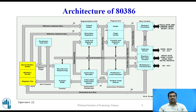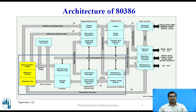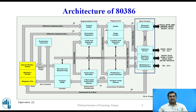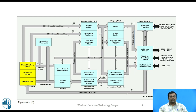Now let us see the architecture of 80386 microprocessor. The architecture of this microprocessor contains 3 main units: the first unit is the central processing unit, the second unit is the memory management unit, and the third unit is the bus interface unit.